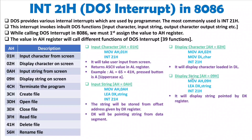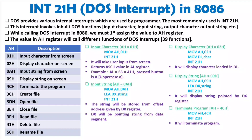To display a string, load AH with 09h, then load the address of your defined string into DX, and execute INT 21h — the string will be displayed. For example, if you define 'Hello World' as a string, load its address into DX and execute INT 21h to display it. To terminate the program, simply load AH with 4Ch and execute INT 21h.